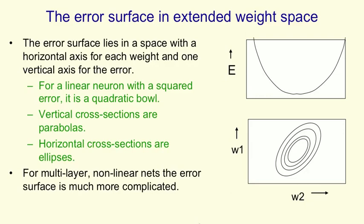For a linear neuron, the errors that you make for each set of weights define an error surface, and this error surface is a quadratic bowl. That is, if you take a vertical cross-section, it's always a parabola, and if you take a horizontal cross-section, it's always an ellipse.